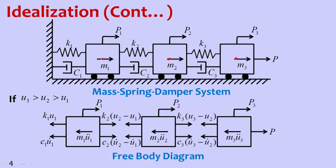For mass 1, it is moving forward with displacement U1. By D'Alembert's principle, the moving mass generates an inertia force opposing the motion, so the inertia force M1·Ü1 acts in the backward direction. Because mass 1 moved forward, there is elongation in spring 1, which pulls the mass back — that pulling force is K1·U1. The damping force is C1·U1̇, proportional to velocity. External force P1 is also acting here.